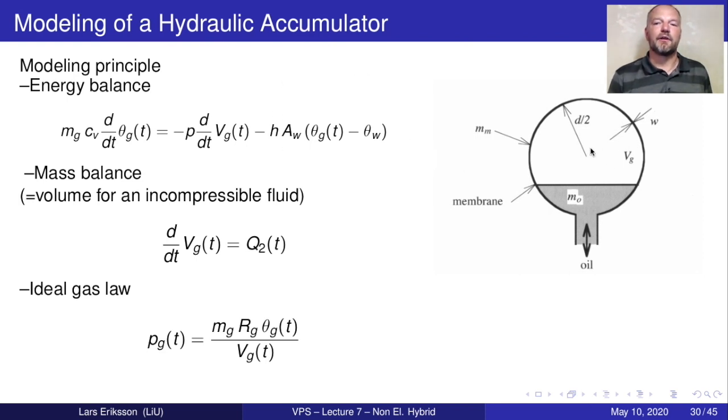That goes from the gas component that we're compressing, and then it is dissipated through the walls. The theta wall here is temperature of the wall of the storage chamber. Then we have the mass balance. This is where we are looking at the hydraulic fluid and the volume, so we have the hydraulic fluid flow and we have the volume of the container.